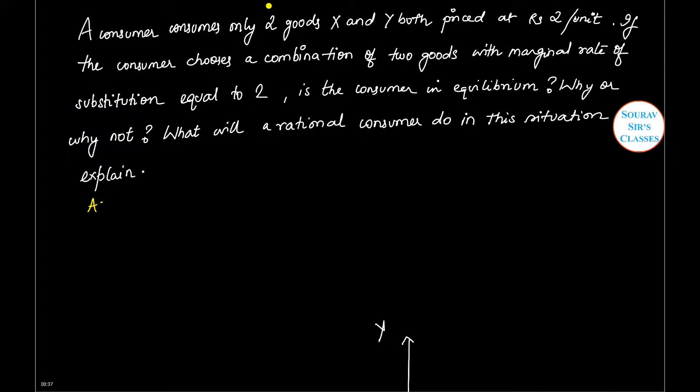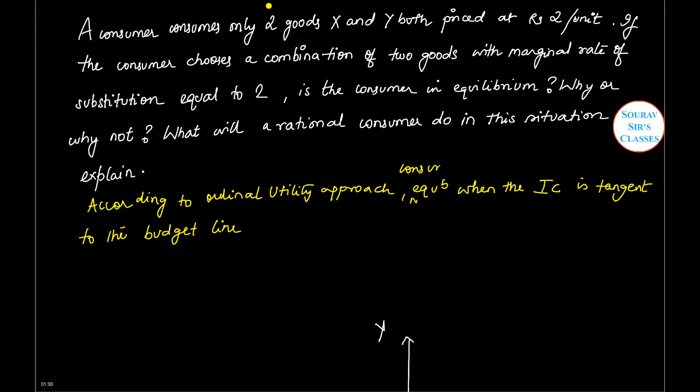According to ordinal utility approach, a consumer will be in equilibrium when the indifference curve is tangent to the budget line. This means we require two conditions to be fulfilled.